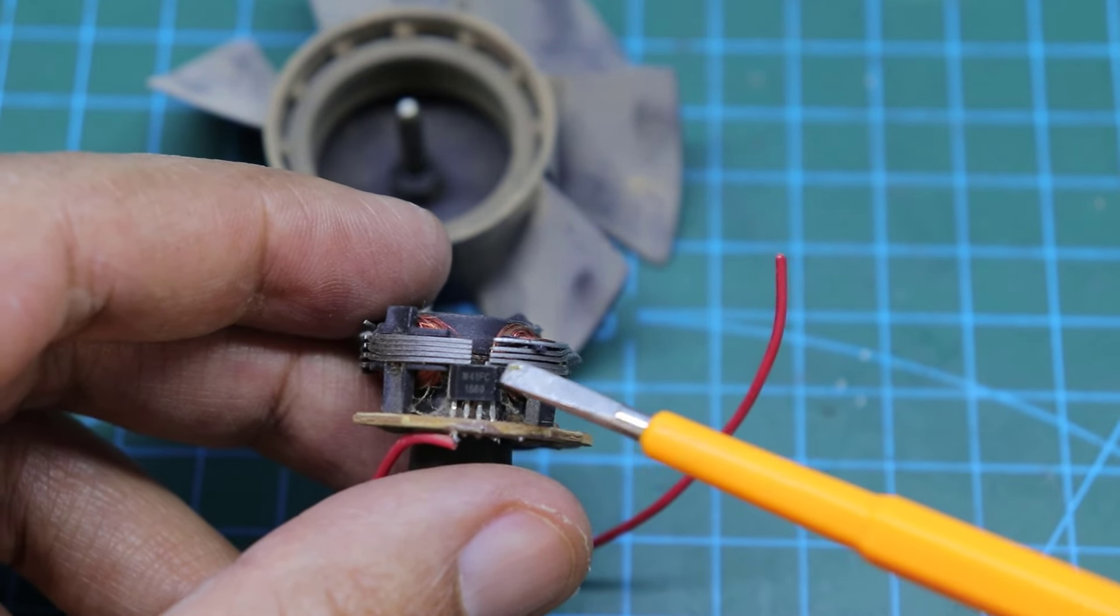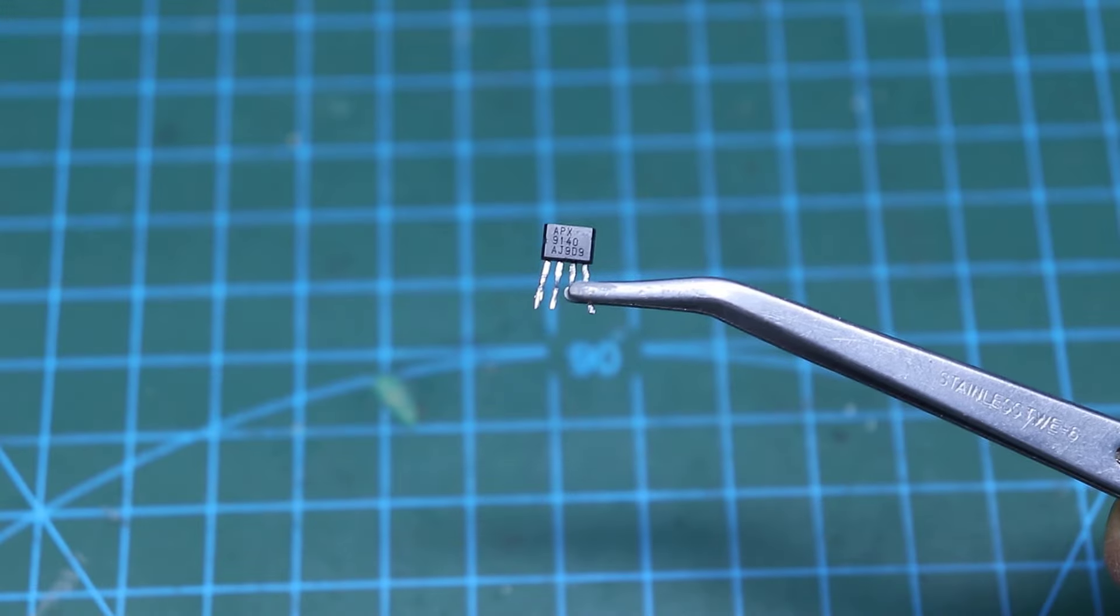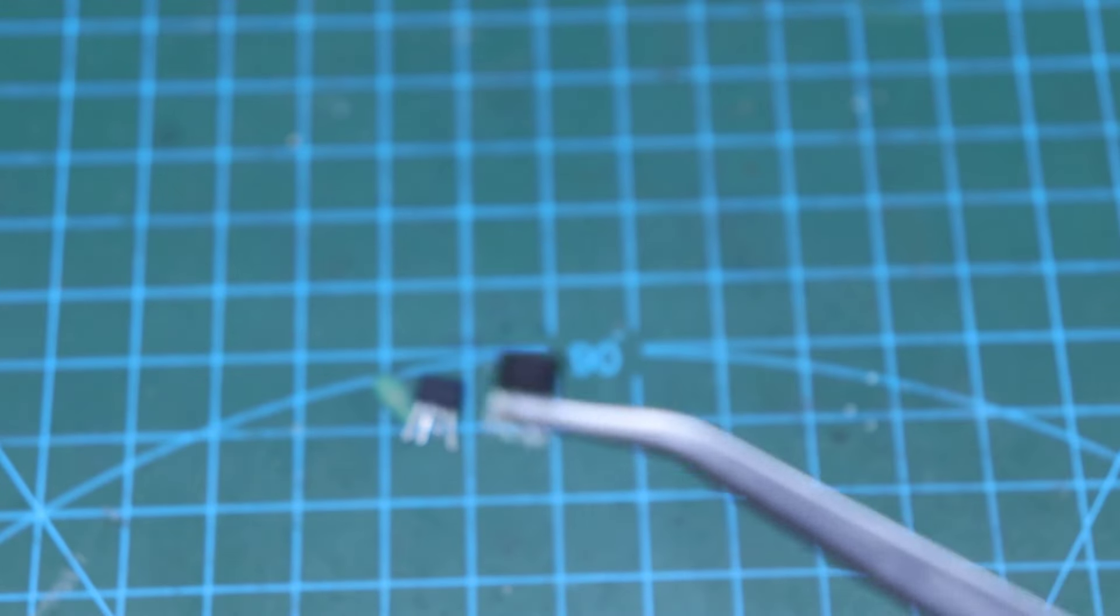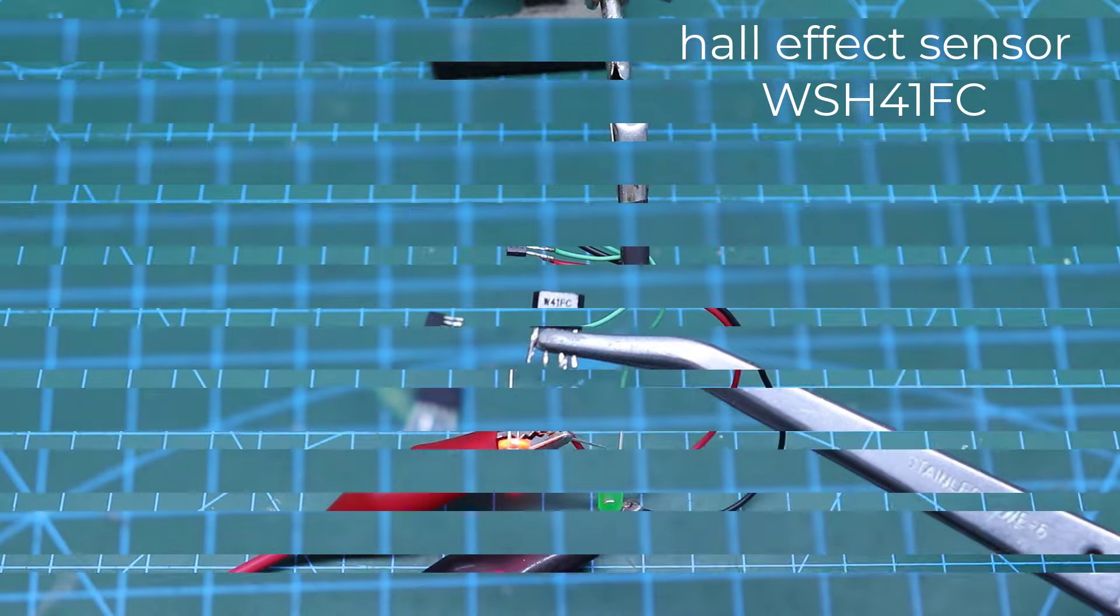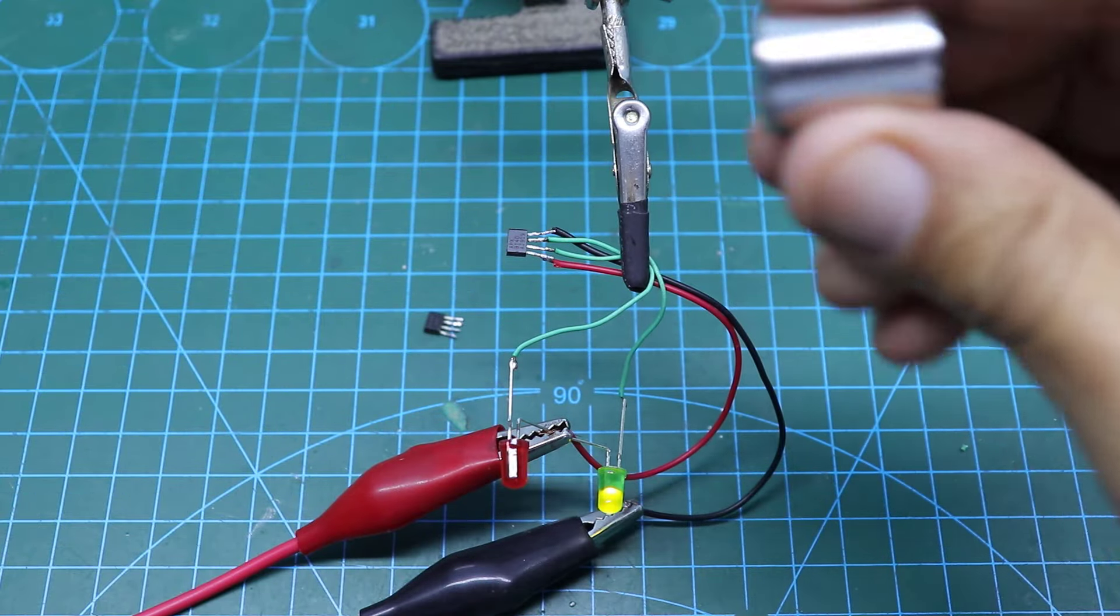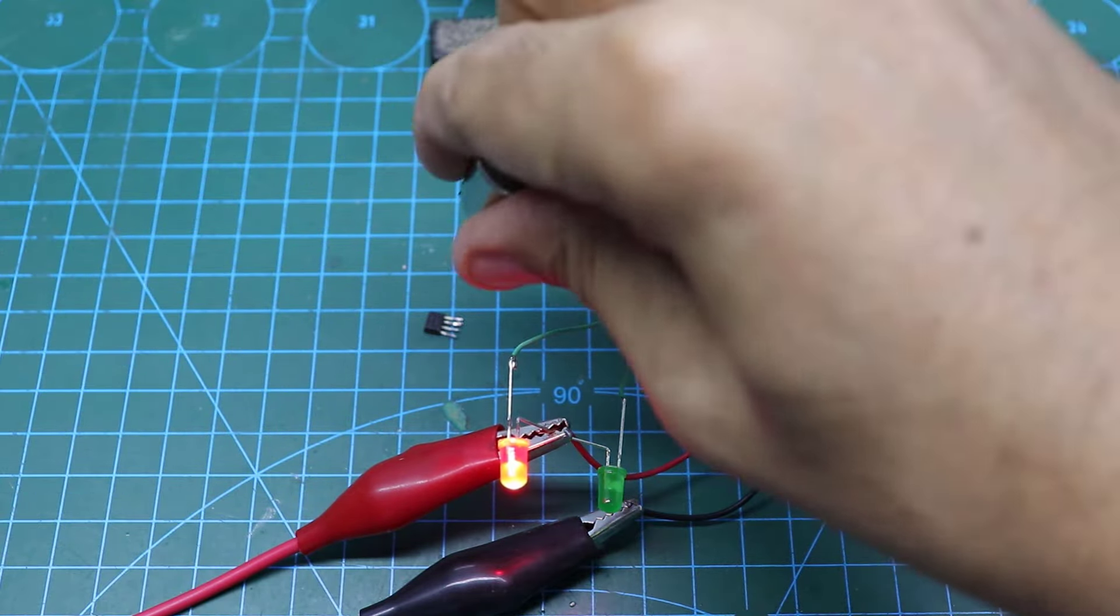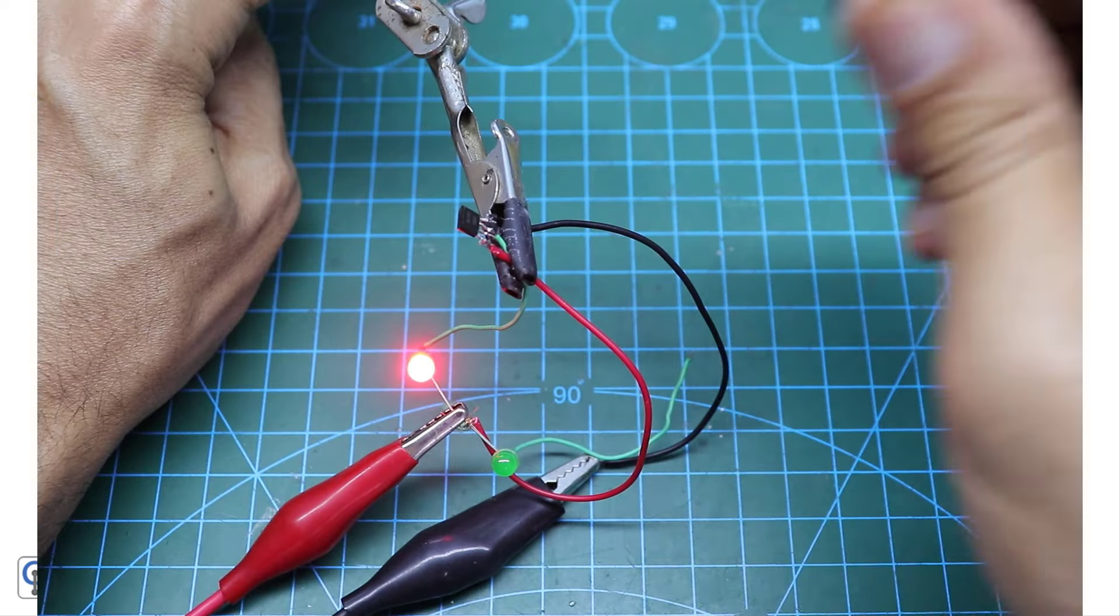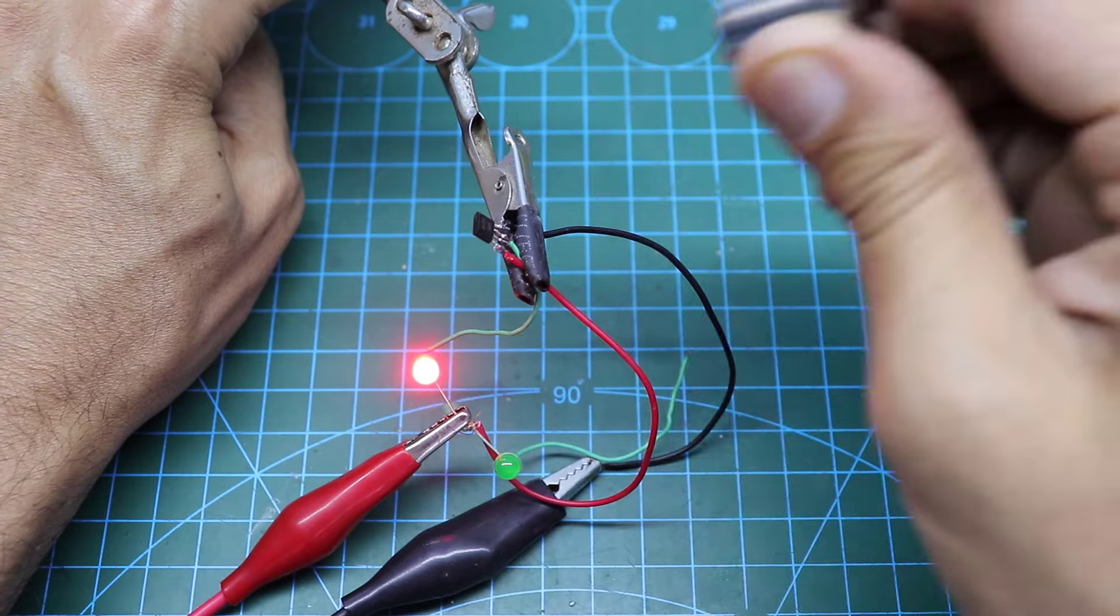This type of motor contains a Hall Effect Sensor. You can see it in different numbers. This component is affected by the polarity of the magnet. With it you can do amazing projects. We will try some of them in this video.